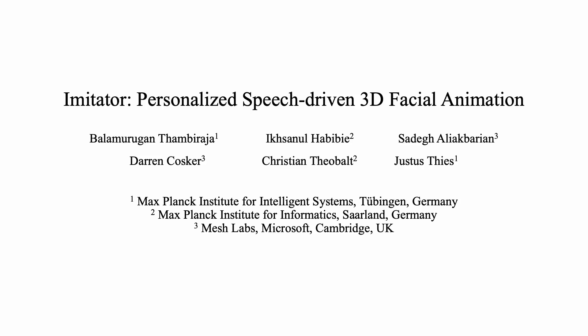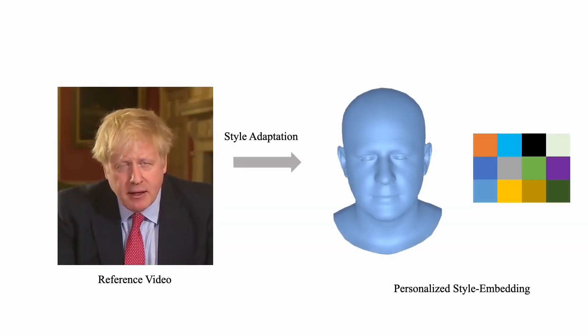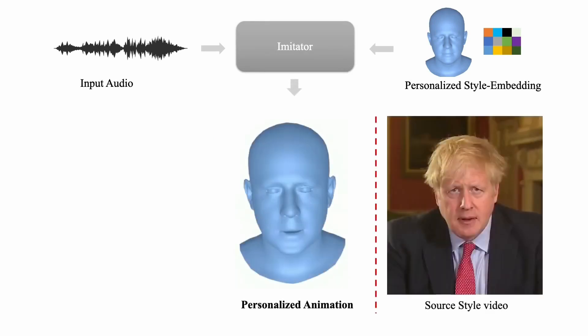We present Imitator, a speech-driven 3D facial animation synthesis method. Imitator generates personalized facial expressions that match the speaking style of the target subject. Given a short reference video as input, we learn a personalized style embedding. Based on an audio input and this learned personalized style embedding, our method generates personalized facial animations.